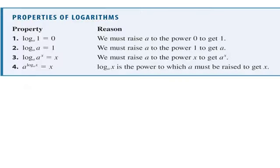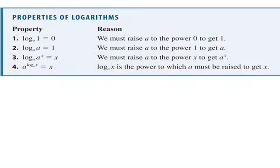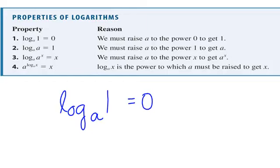We need to memorize these properties of logarithms. Property one: the logarithm base a of 1 equals 0. No matter what the base is, the log of 1 is always 0. If we check it with a loop-de-loop, a to the 0 equals 1 — and that's true, because anything to the 0 power is 1.